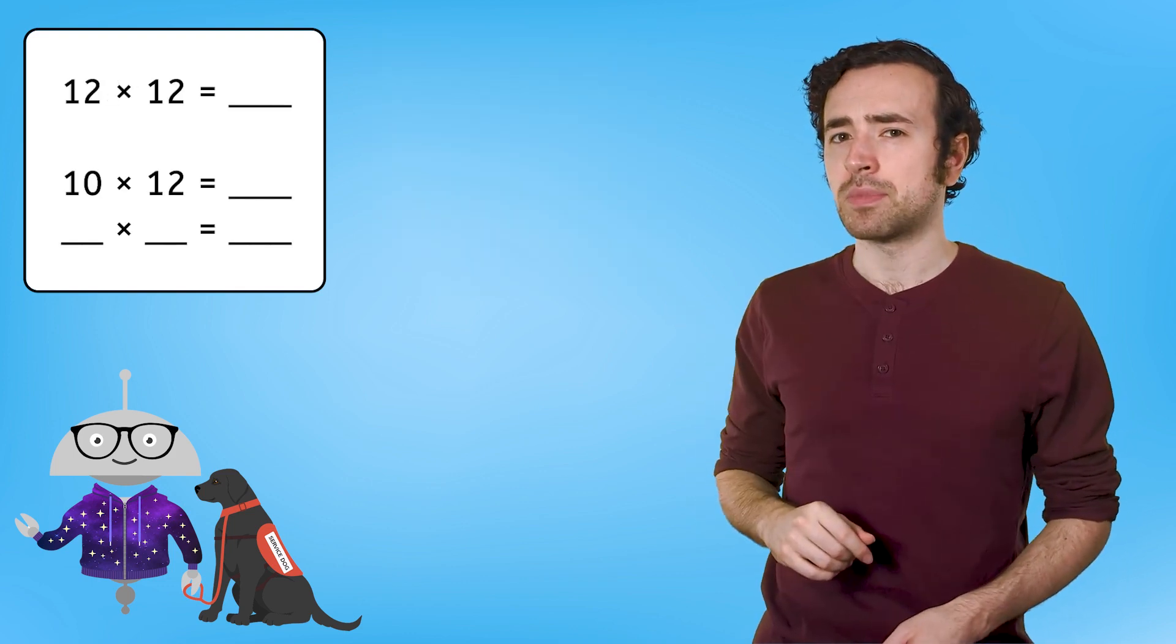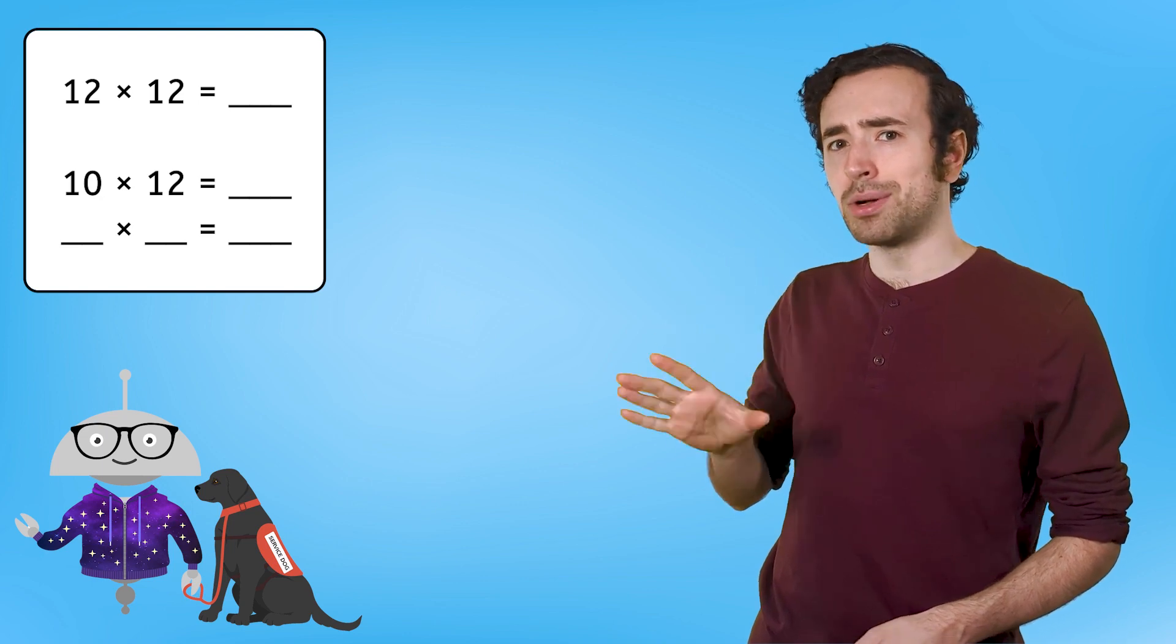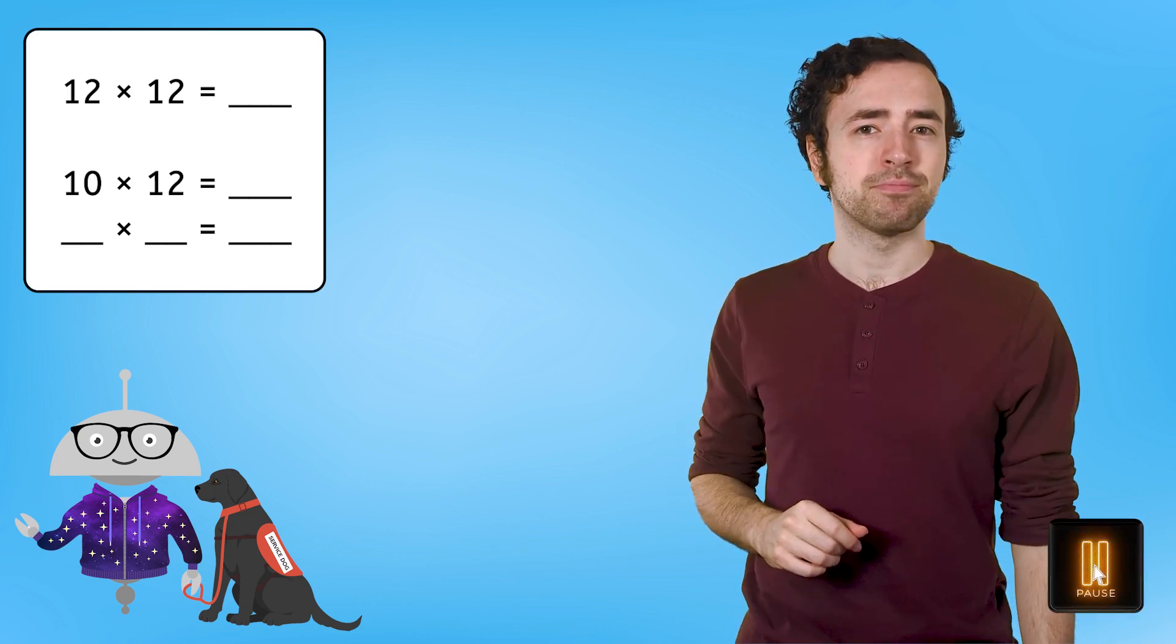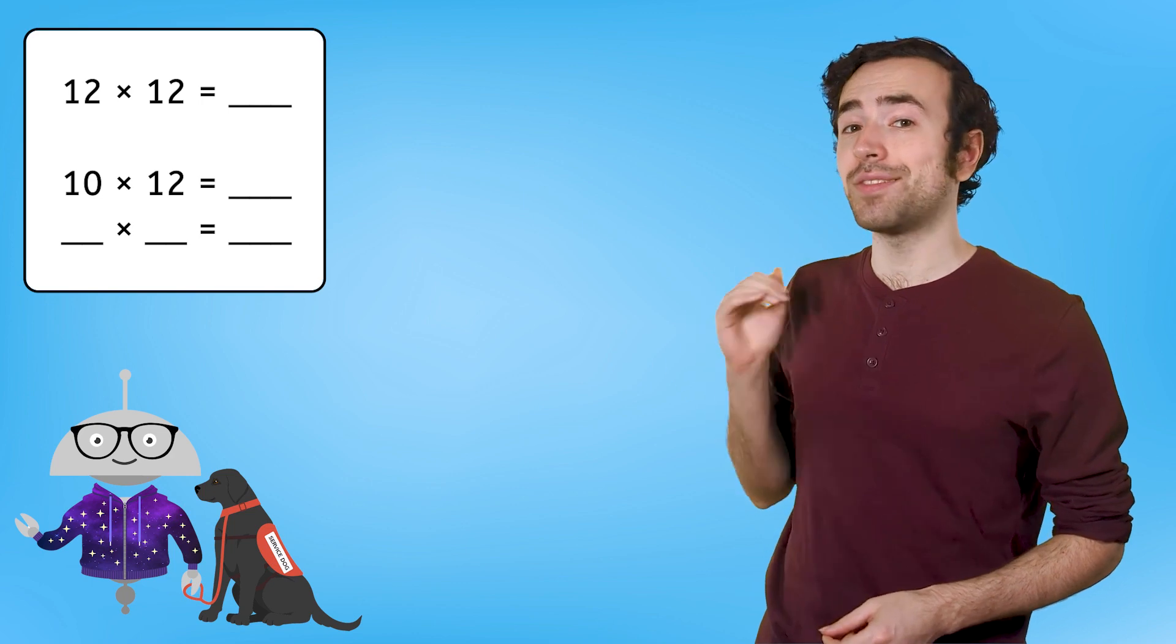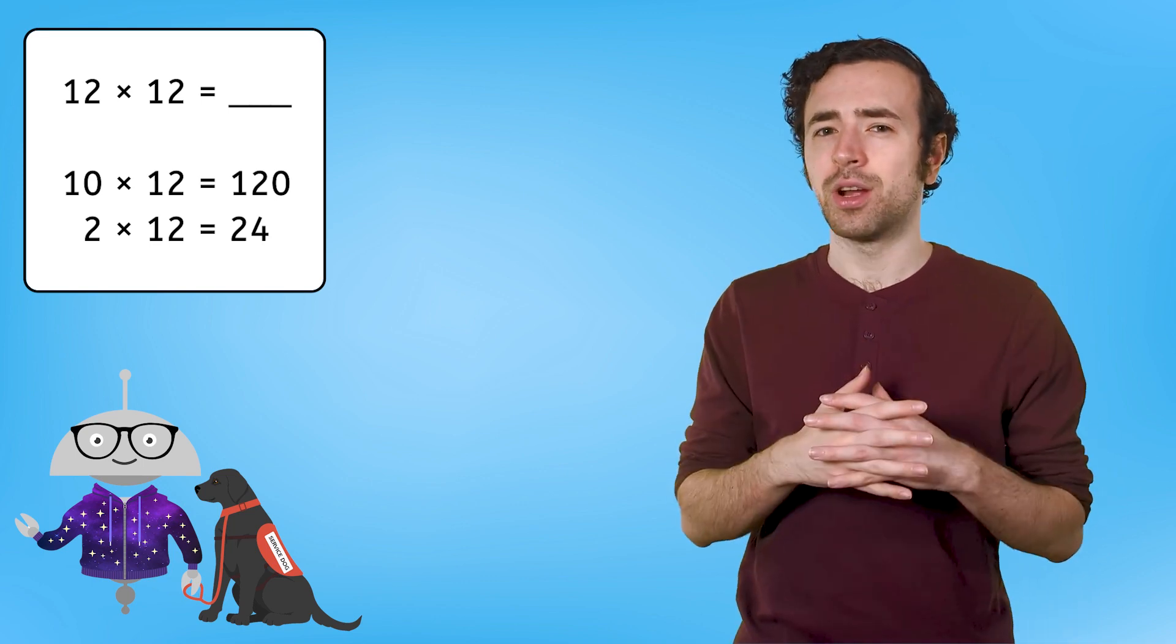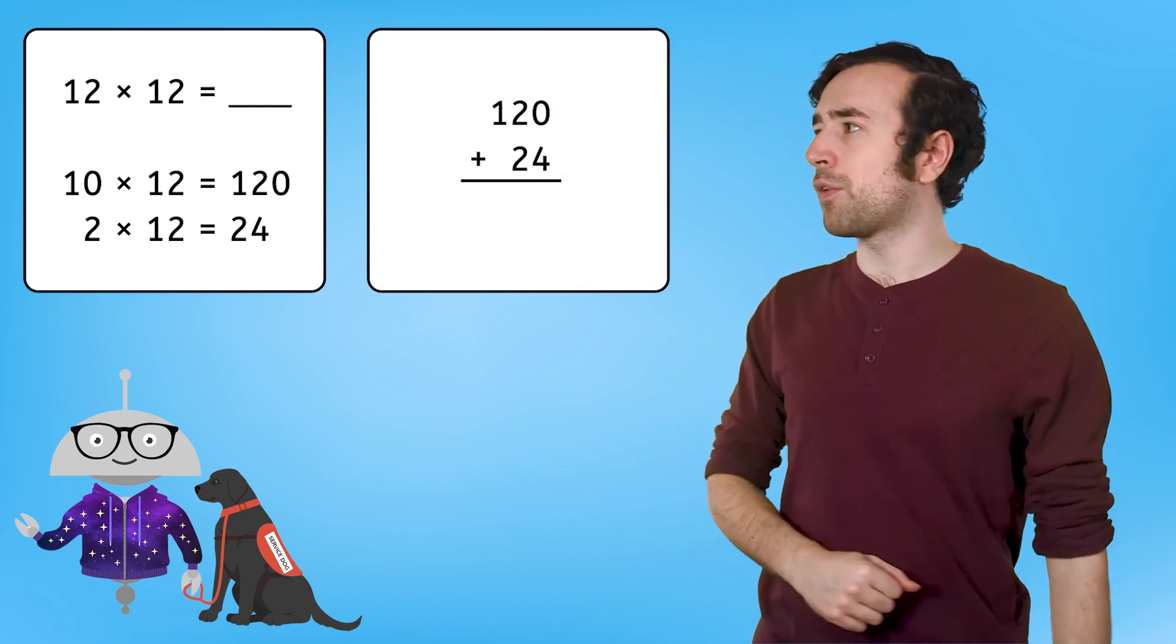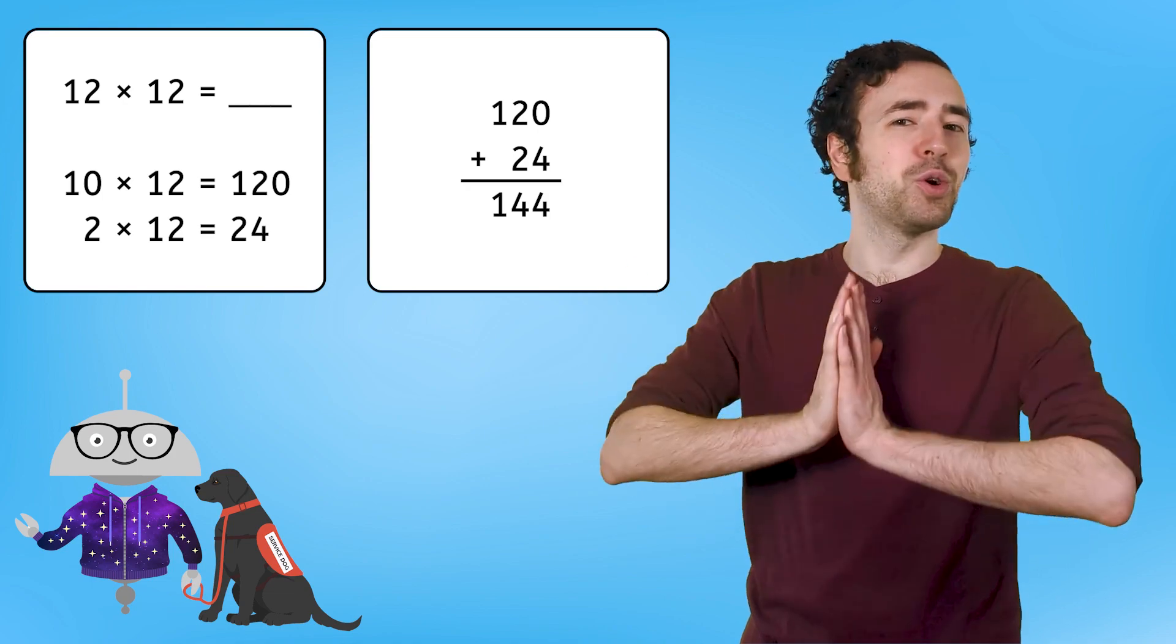The next problem has a bit more missing. Looks like we're solving 12 times 12, and so far, we have 10 times 12 equals something, and then a blank multiplication sentence. Try using the Partial Product Strategy to finish solving 12 times 12 in your guided notes. You can also look back at your work from the previous problem if you need help. You may have solved this in a slightly different order, and that's totally okay. I like to figure out the problems I need to solve first. We have 10 times 12, so what still needs to be multiplied by 12? 2. Now we have 10 times 12, which equals 120, and 2 times 12, which equals 24. Adding these partial products together will give us our final total. 120 plus 24 equals 144, so 12 times 12 equals 144.